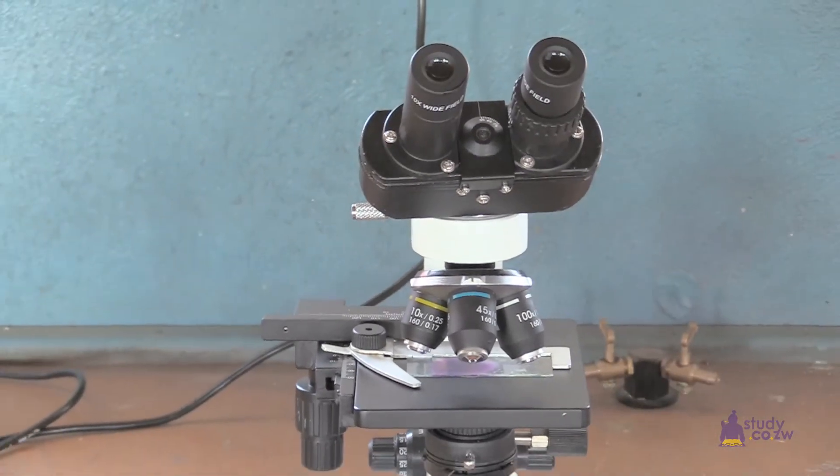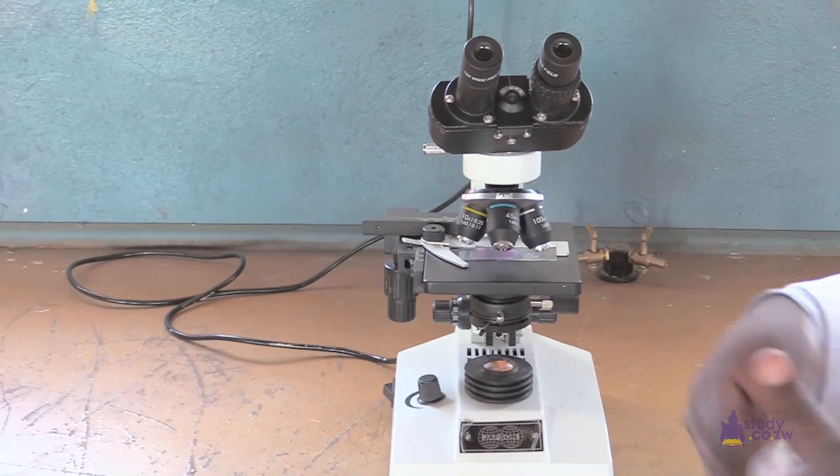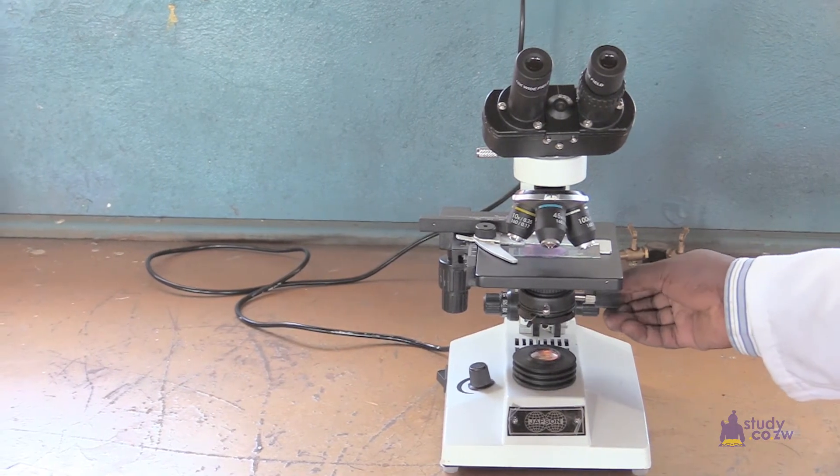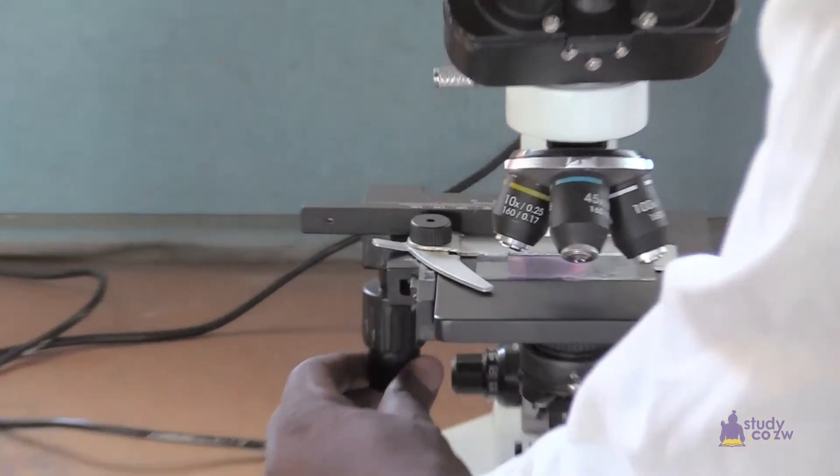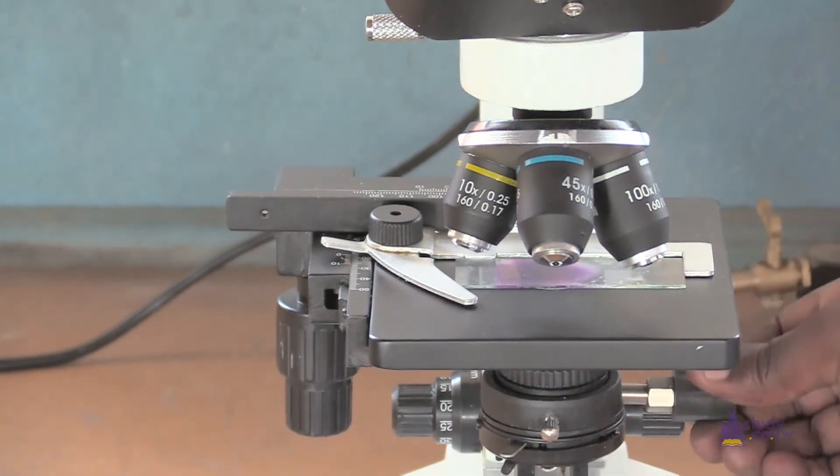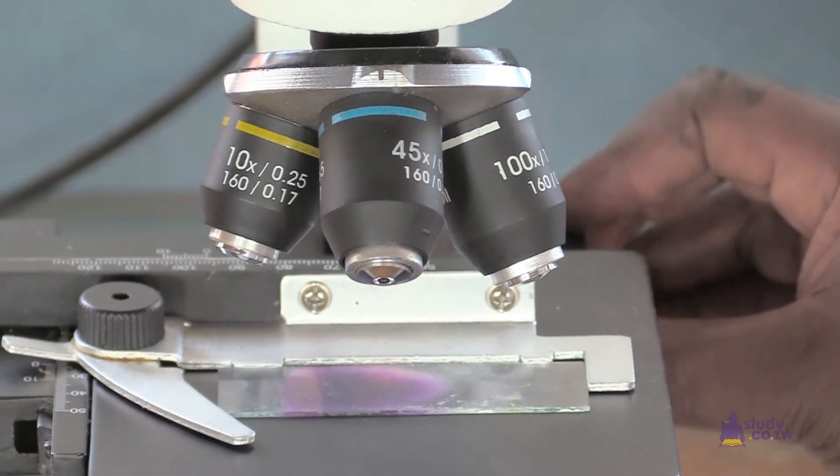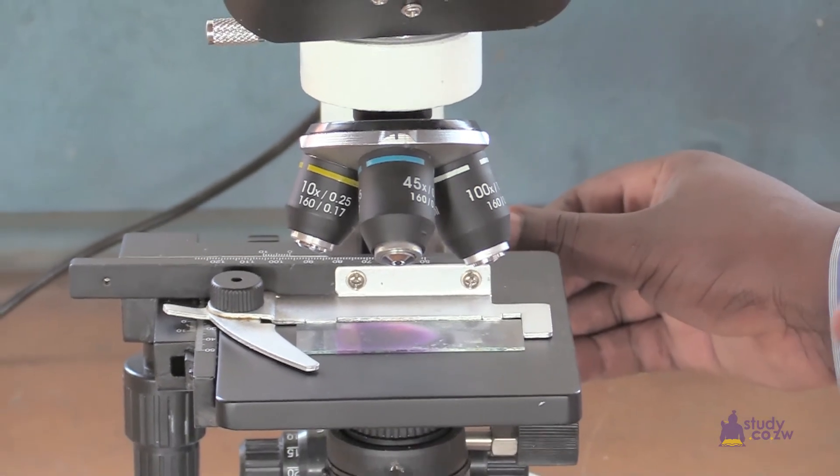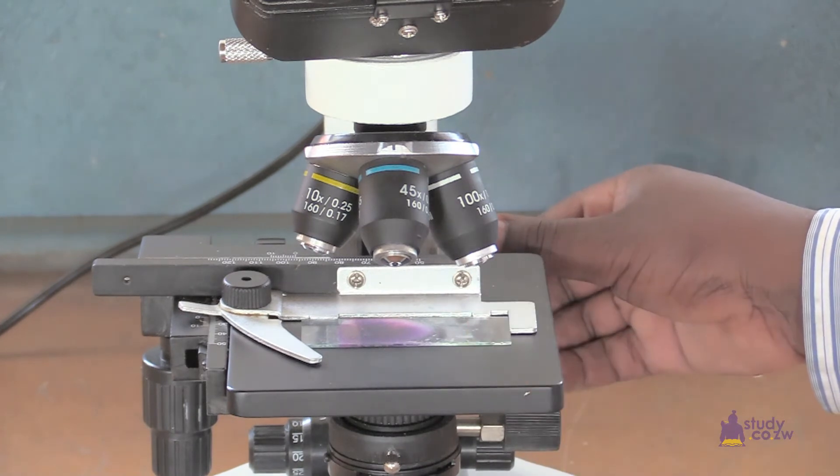And this is the mounting table. It is adjustable. You can adjust it to suit the position that you require. This is how you adjust. You can see this light. You can move the mounting table, the slide table. So if you need more light, you bring it down closer to the source of light. If you need less light, you move it upwards away from the source of light.